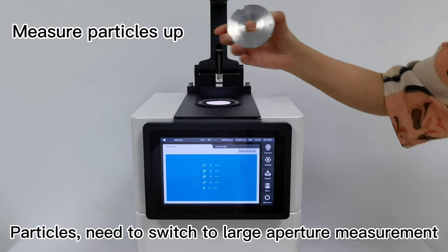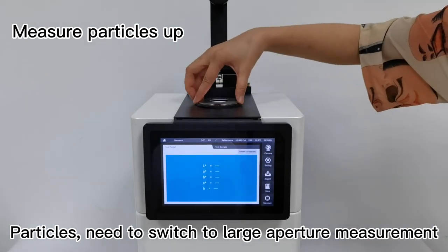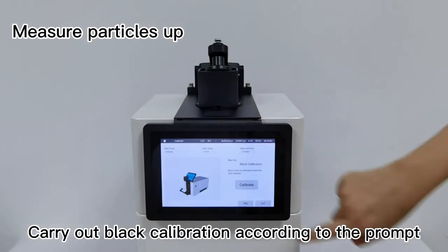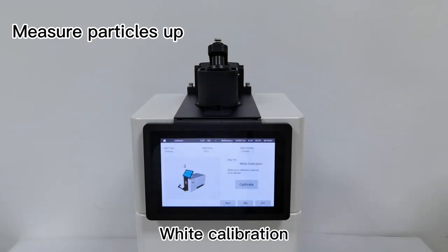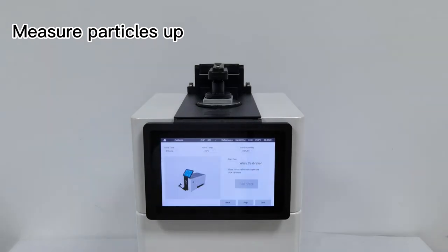Particles need to switch to gesture measurement. Carry out black calibration according to the prompt, then white calibration.